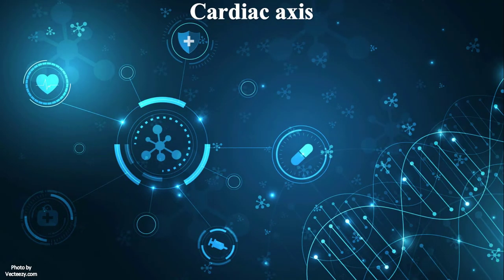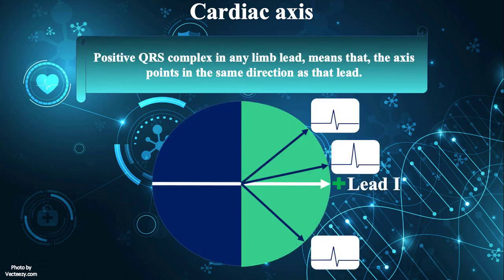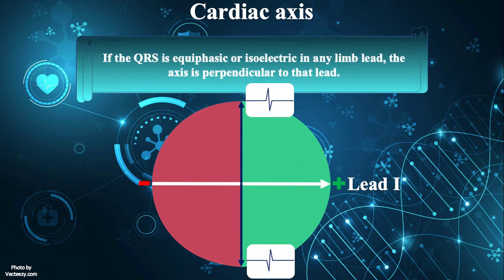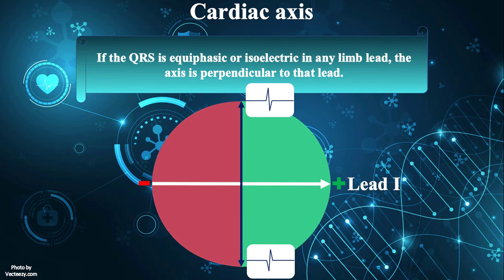Cardiac axis is indicative of the sum of depolarization vectors produced by cardiac myocytes. In clinical electrocardiography, cardiac axis is calculated by examining QRS changes in limb leads. A positive QRS complex in any limb lead means the axis points in the same direction as that lead. If the QRS is negative in any limb lead, the axis points in the opposite direction. If the QRS is equiphasic or isoelectric in any limb lead, the axis is perpendicular to that lead.